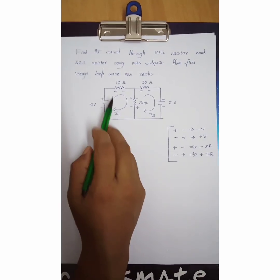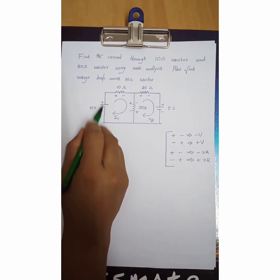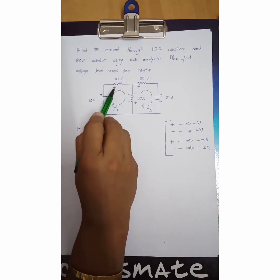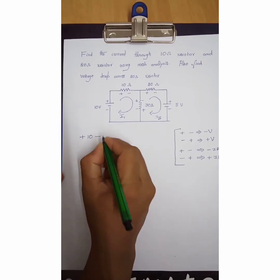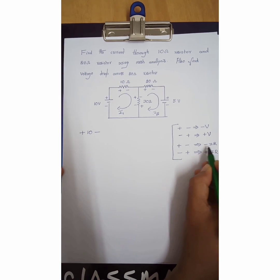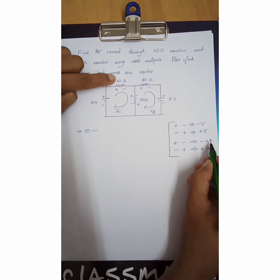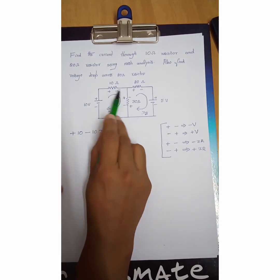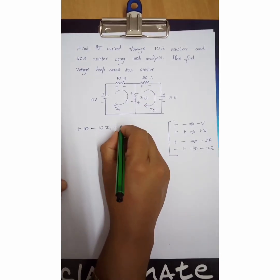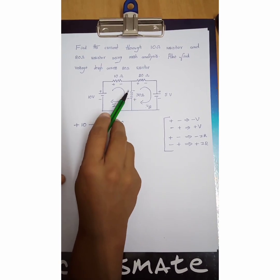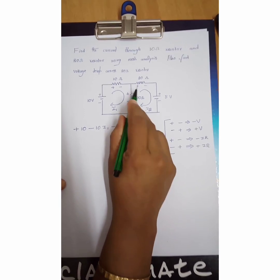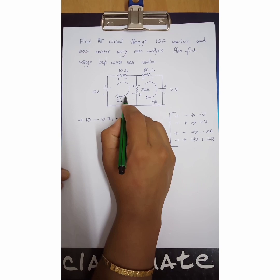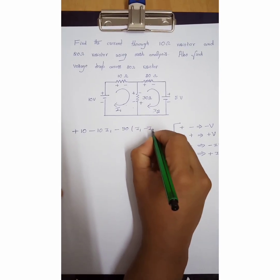For the first loop: the voltage source is minus to plus, which is a voltage rise, so we take plus 10. The second element — moving from plus to minus — is a voltage drop, so it is minus I1 times 10, giving minus 10I1. For the 30 ohm resistor, again moving plus to minus is a drop, so the sign is minus. For 30 ohm, two currents flow: I1 downward and I2 upward — opposite directions — so the net current is the difference. Since we are in the first loop, we take I1 minus I2, giving minus 30(I1 − I2).